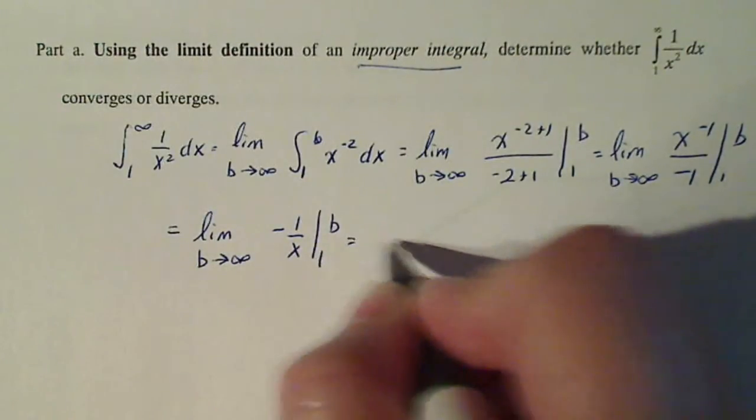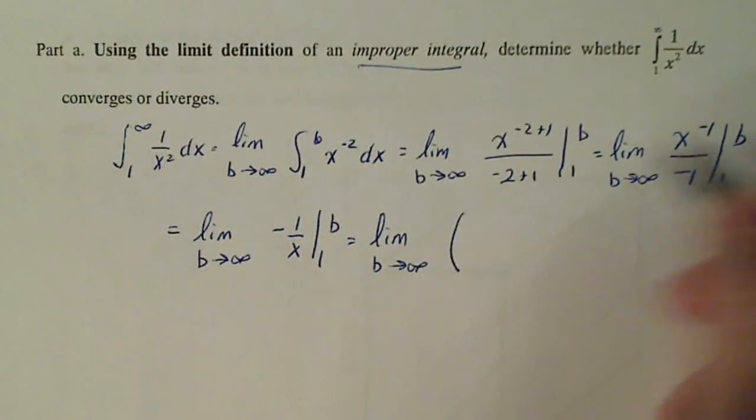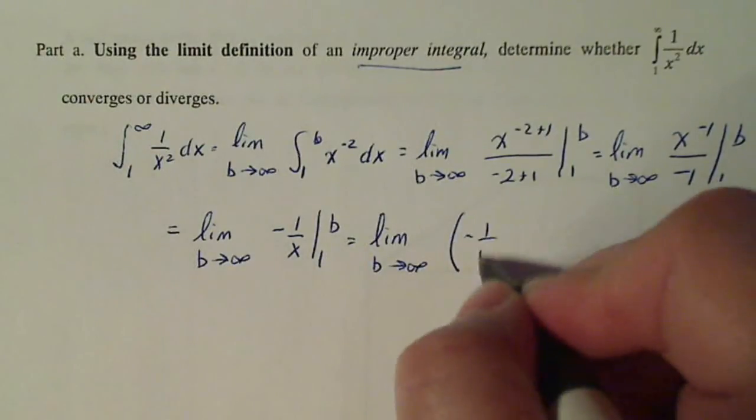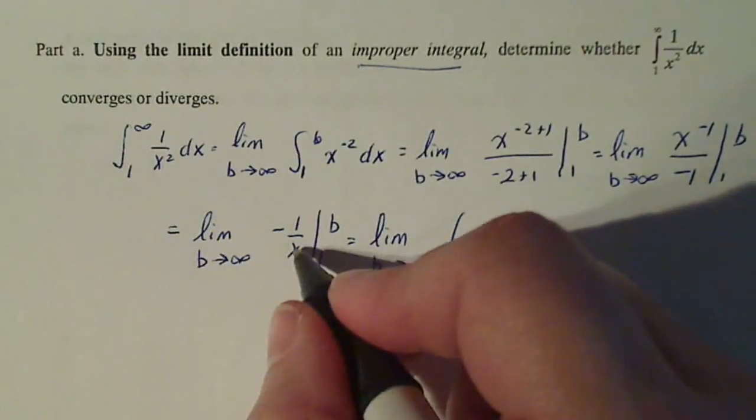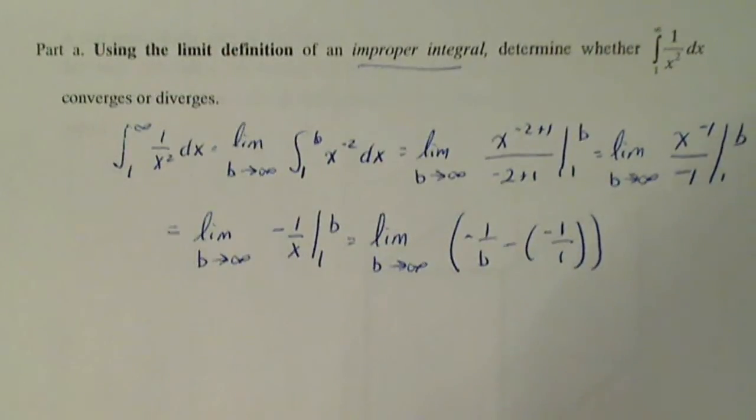So now I'm going to use the fundamental theorem. Notice my limit notation is still coming along because I haven't even thought about that part yet. But the fundamental theorem says I take b and stick it in there. And I take one and stick it in there. And then I take the limit.